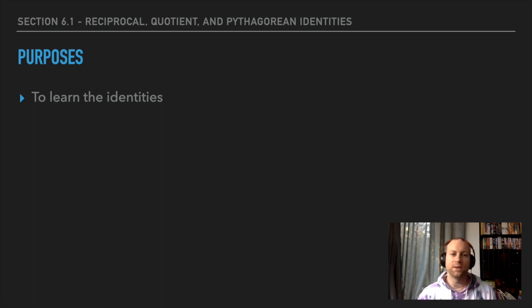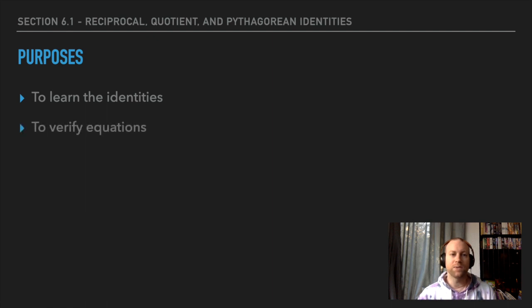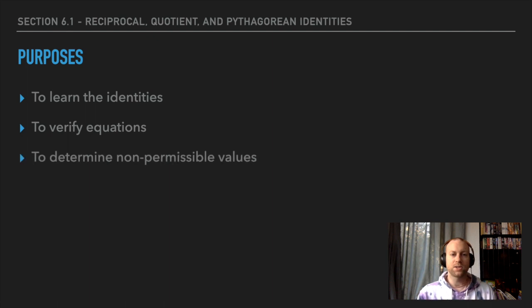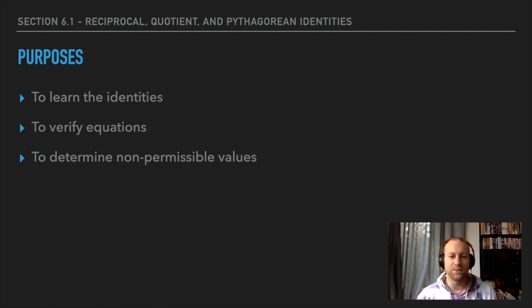The purposes for this lesson are to learn the identities — the reciprocal, quotient, and Pythagorean identities — and we are going to verify equations and then determine some non-permissible values. Non-permissible values are important; hopefully you remember them from last year. If not, I'll re-explain what those are.